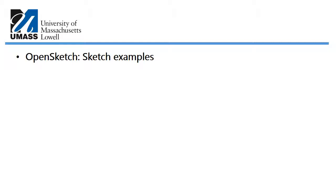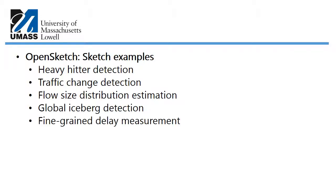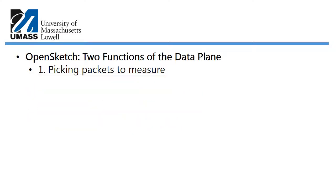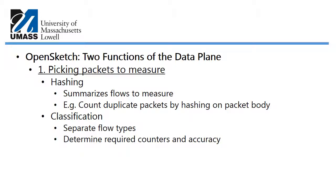OpenSketch provides several measurement tasks including heavy hitter detection, traffic change detection, flow size distribution estimation, global iceberg detection, and fine-grain delay measurement. In the data plane, OpenSketch performs two functions. The first is picking which packets to measure — hashing allows summarizing flows, for example counting duplicate packets by hashing on the packet body. Classification separates different flow types and determines what counters and accuracy are required, such as focusing on a specific IP address to identify a potential network anomaly.